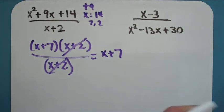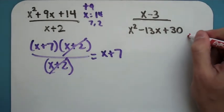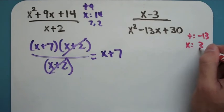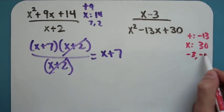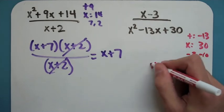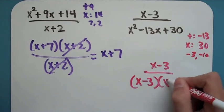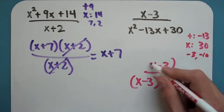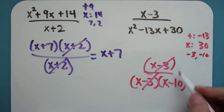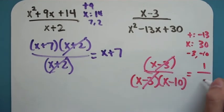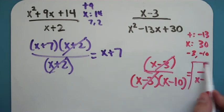And the last problem here, if I do magic numbers on the bottom, I need to add to negative 13 and multiply to positive 30, that will end up being negative 3 and negative 10. So my problem factors into x minus 3 on top, x minus 3, x minus 10 on the bottom. As luck would have it, I have matching x minus 3's that can cancel. There's nothing left up top, so I'm going to put a 1 there. Because this is in the bottom, I have to keep it in the bottom. It's 1 over x minus 10. That is my final answer.